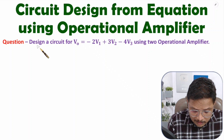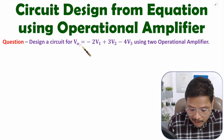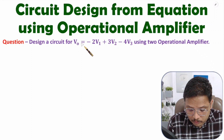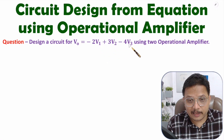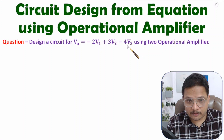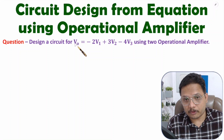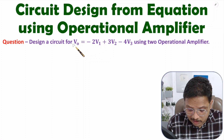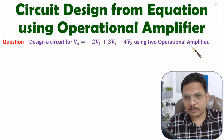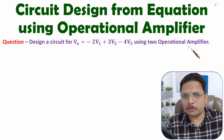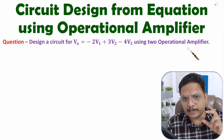The question is: design a circuit for output V0, where V0 equals minus 2V1 plus 3V2 minus 4V3. Here, V1, V2, V3 are inputs and V0 is the output. This equation needs to be implemented using two operational amplifiers. I will explain the complete process of making the circuit.